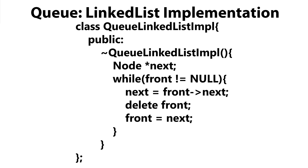Last but not least, we're going to need a destructor, because we dynamically create each node that we add within our queue. This destructor is essentially the same as the singly linked list destructor — I already went over that in my singly linked list video, so if you want to take a look at how that works, you can check out that video. That pretty much wraps it up for our queue linked list implementation.